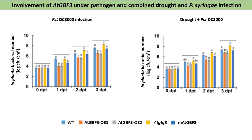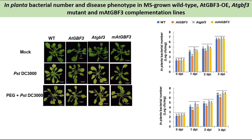We also analyzed the response of ATGBF3 in MS-grown plants under pathogen and combined stress. Phenotypic observations showed more severely infected leaves in mutant plants and fewer severely infected leaves in ATGBF3 overexpression plants. In planta bacterial numbers were significantly lower in ATGBF3 overexpression plants and significantly higher in mutant plants under pathogen and combined stress.